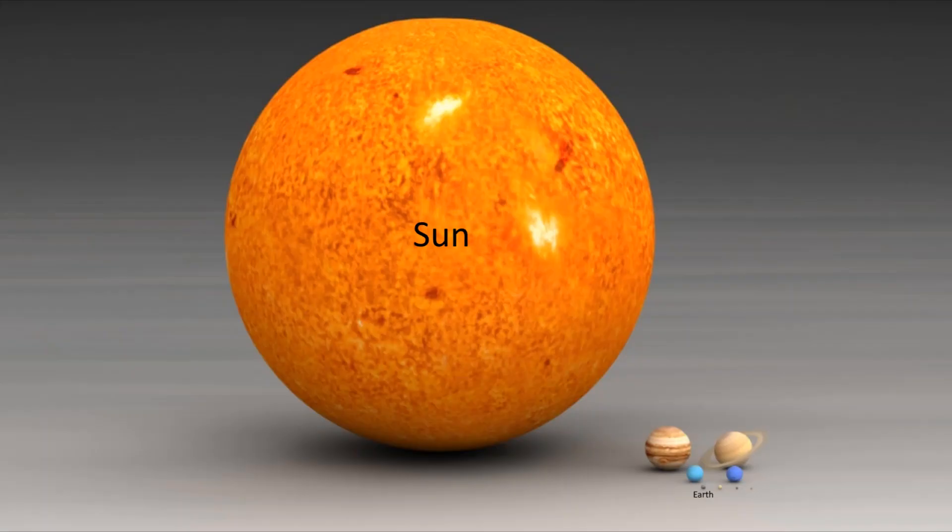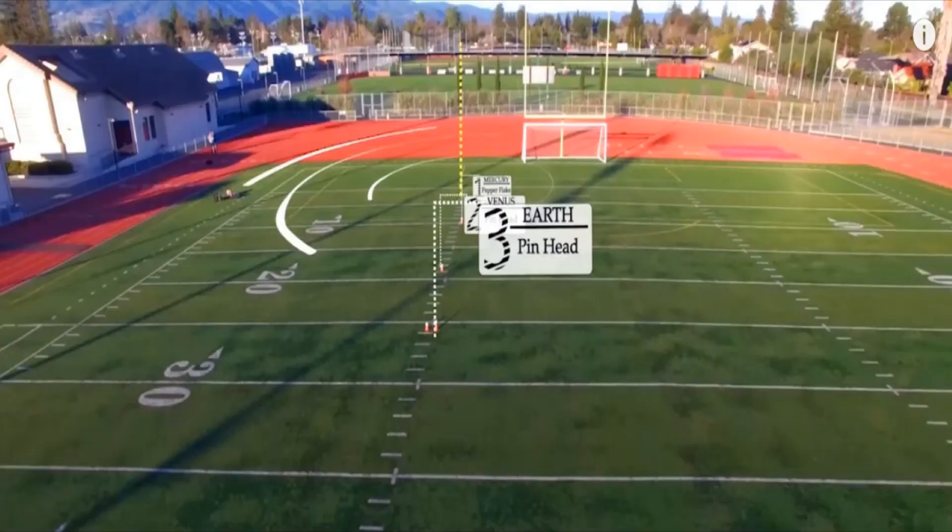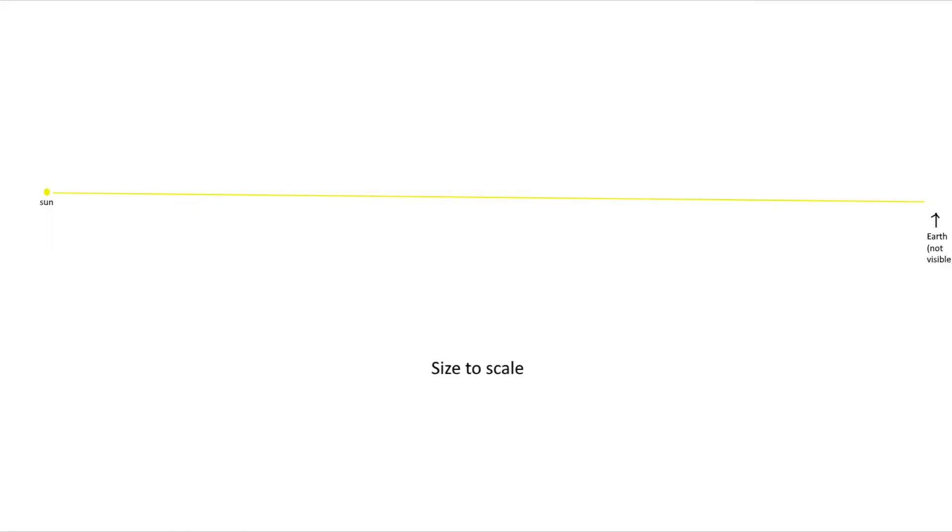Compared to the Earth, the Sun is huge. Its diameter is more than 100 times as long. And to scale, the Earth is very far away. If the Sun was the size of a soccer ball, the Earth would be the size of a pinhead 26 yards away. The Earth is so far and small that the rays of the Sun hit it essentially in parallel. But forget about that for a sec.